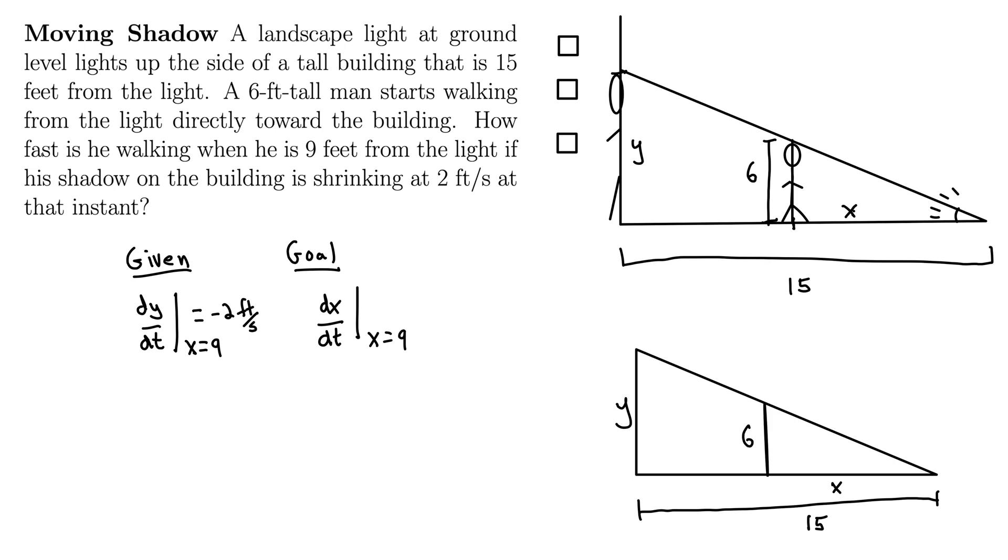And then similar triangles relate the ratios of all the sides here. So there's a bunch of ways you can do similar triangles, but I'll do the small triangle to the large triangle. So that tells us X is to 15 as 6 is to Y. And there we have an equation that relates everything in this example in a simple equation. Let's just simplify it a little more by multiplying up by 15. So we have X equals 90 over Y.